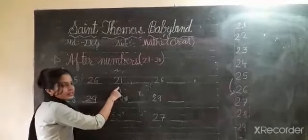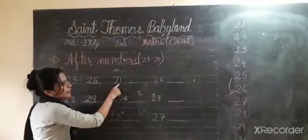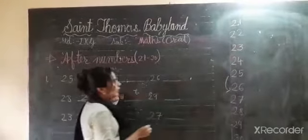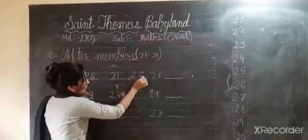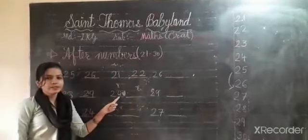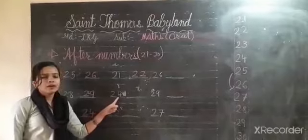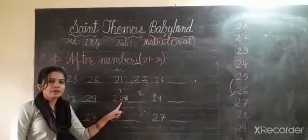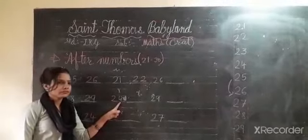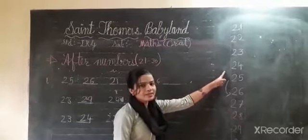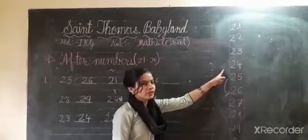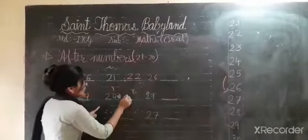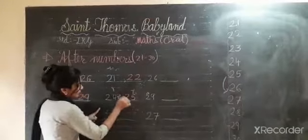See, what is this? This is 24. Now can you say after 24, what will come? You can see — 24, 25. Okay?